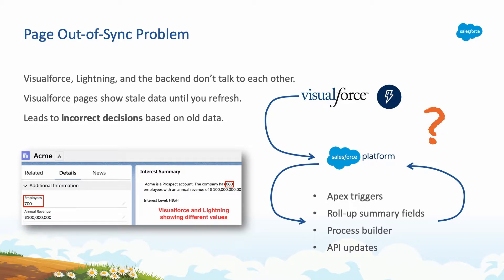This situation can happen any time you've got deep back-end processes, like Apex triggers or roll-up summary fields — some situation where a UI, like Visualforce or Lightning, saves to the back-end, and that data gets further processed in the back-end. But the connection back to the UI is corrupt or not made, and so you don't end up seeing the correct data in the UI until you refresh your browser screen. That's a big problem.